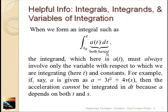We'll be doing integrals of the form integral from t₀ to t of a(t) dt, and this all works if everything is a function of either t or s. But we can't do it if variables are mixed — for example, if a is given as 3t² + 4v, and v is a function of s, we can't just integrate over time because v and s are functions of time in a way that's not given explicitly.